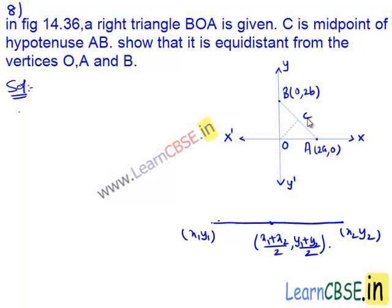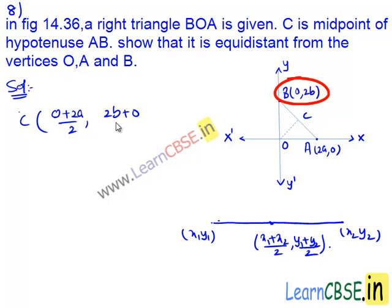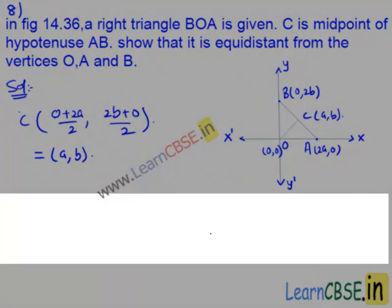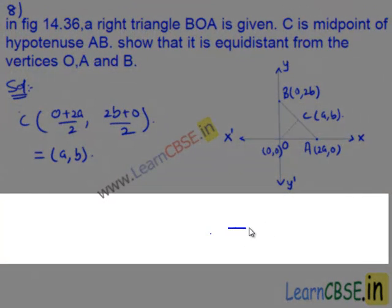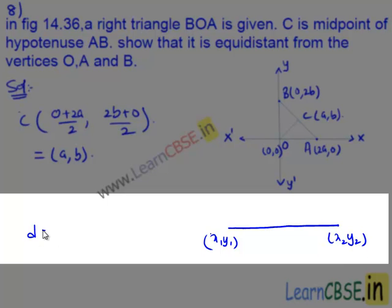Then the coordinates of the midpoint C will be 0 plus 2a divided by 2, comma, 2b plus 0 divided by 2. This implies C is equal to (a, b). We also know that the distance between two points (x1, y1) and (x2, y2) is given by D equals the square root of (x2 minus x1) whole square plus (y2 minus y1) whole square.